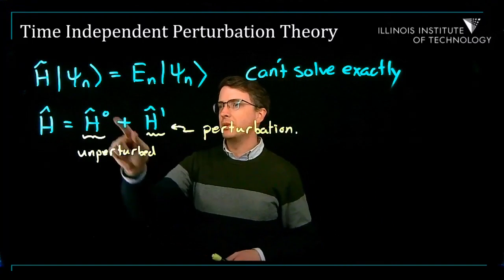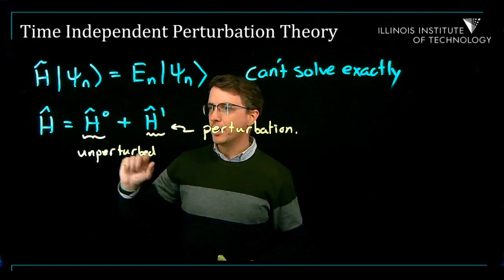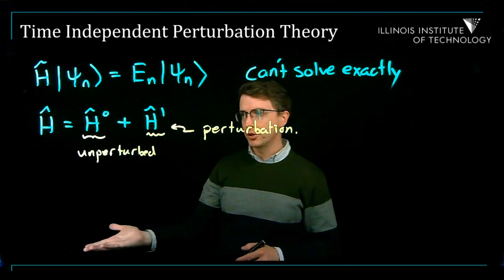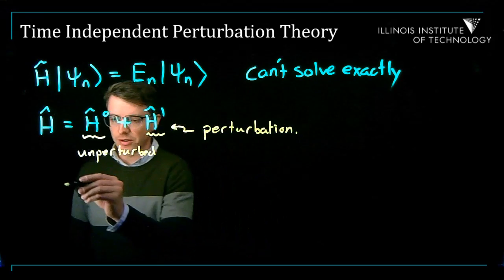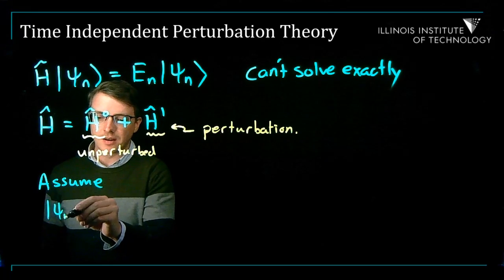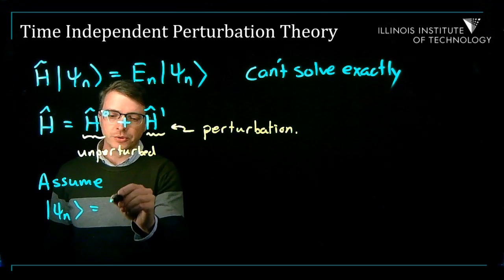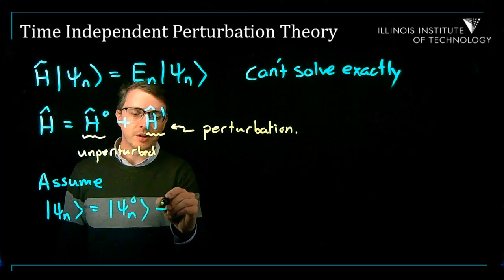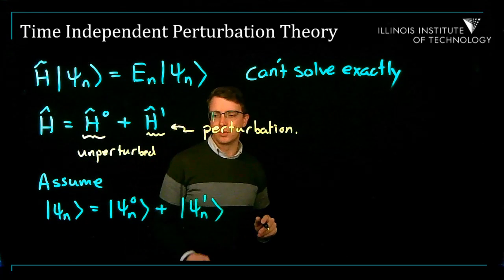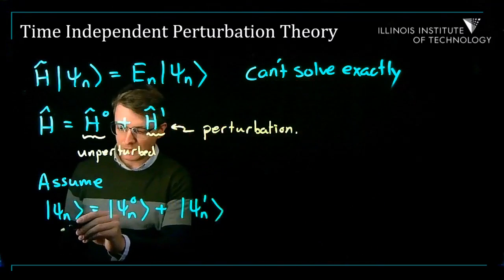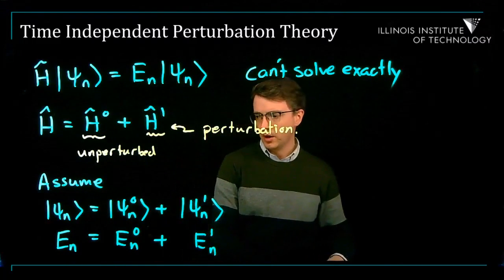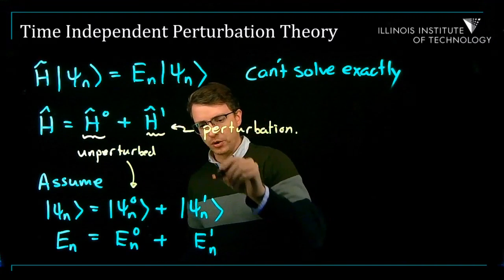The idea is to assume that your wave function is going to be your unperturbed one plus a correction, and your energy levels are also going to be an unperturbed energy level plus a correction. So we're basically going to assume that psi-n equals psi-n-0 plus psi-n-1, for a perturbed wave function — this is like a correction. The same thing for the energies. These here are unperturbed, and these here are corrections.